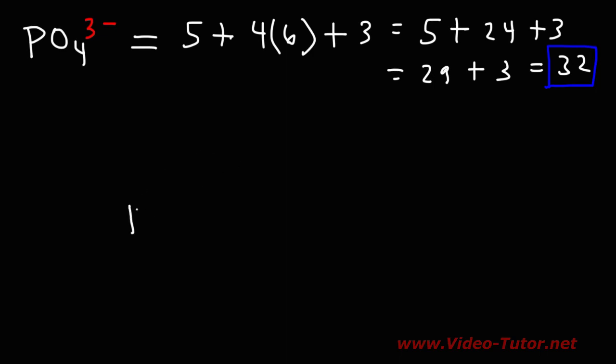So we're going to put phosphorus at the center, and then we're going to place the 4 oxygen atoms around it. Now, we need to know how many bonds phosphorus is going to form.